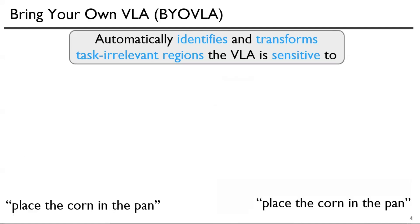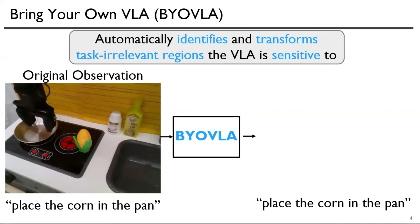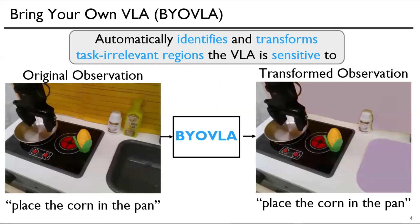We introduce Bring Your Own VLA, a runtime intervention scheme that automatically identifies and inpaints task-irrelevant regions of the input observation that the model is sensitive to.